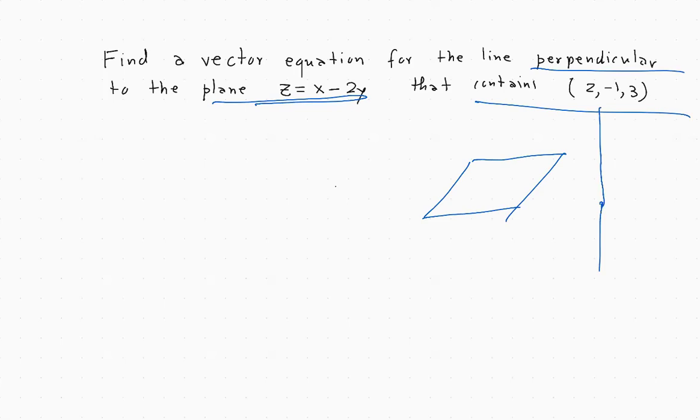To find a vector equation for this line, we need to simply find a vector parallel to the line. Since the line is perpendicular to the plane, any vector parallel to the line will also be normal to the plane, and vice versa. So if we take a vector which is normal to the plane, then that will give us the sought-for parallel vector to the line.